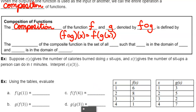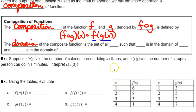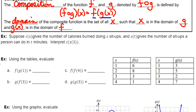We have an inside function and an outside function — g of x being the inside function, f being the outside function. When we talk about putting two functions together, we can talk about their domain. The domain of the composite function is the set of all x such that x is in the domain of g and g of x is in the domain of f. Don't get too caught up on domains — when we get to that piece, we'll look at them individually.